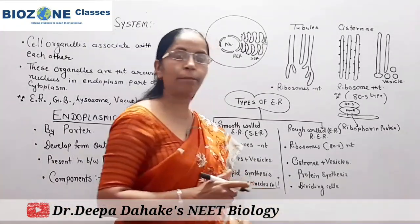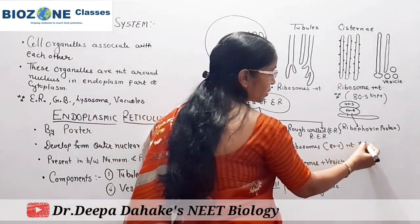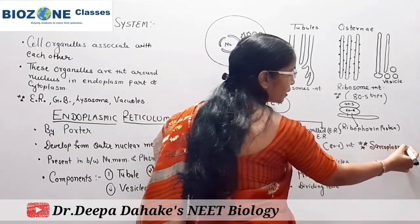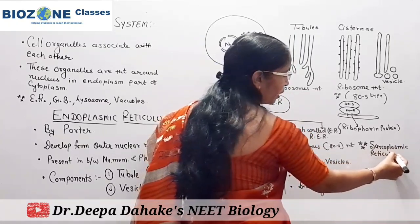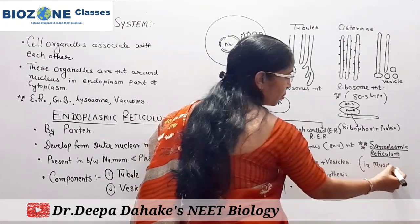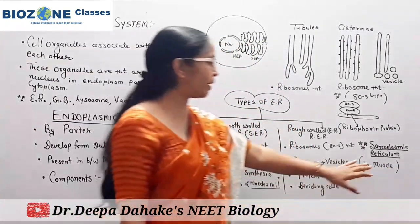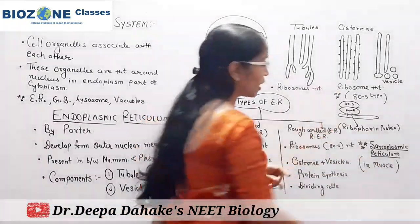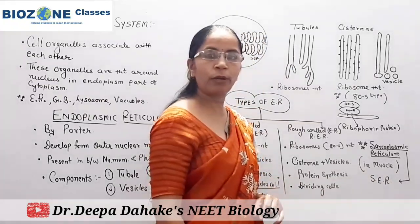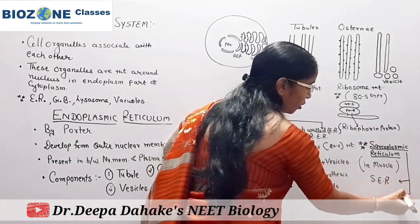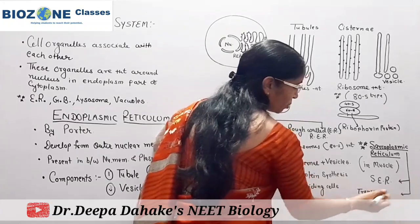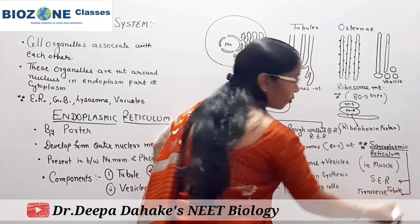For sarcoplasmic reticulum: it is the endoplasmic reticulum present in muscles. The cytoplasm of muscle is called sarcoplasm, hence the endoplasmic reticulum is called sarcoplasmic reticulum. It is a type of smooth endoplasmic reticulum. The identifying feature of the sarcoplasmic reticulum is the presence of transverse tubules.